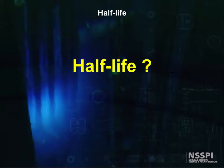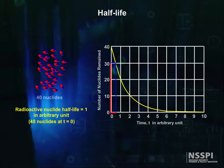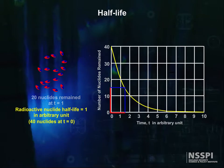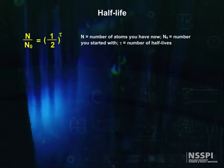We keep throwing around the term half-life, and now is a good time as any to put some math to it. Looking at half-life, we see that one half-life cuts things in half, two half-lives cut things in fourths. How about n over n0 is equal to one half to the tau, where n is the number of atoms you have now, n-sub-zero is the number you started with, and tau is the number of half-lives.